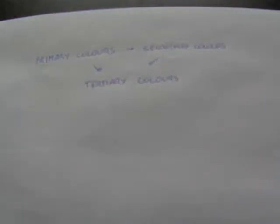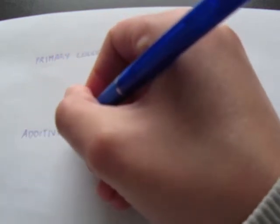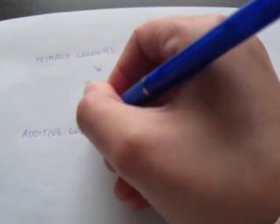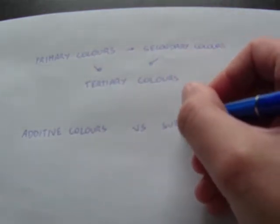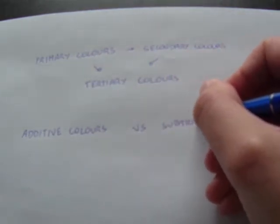Colors can be mixed in different ways: either we add colors together, or we subtract colors from each other. The results are called additive colors or subtractive colors respectively.